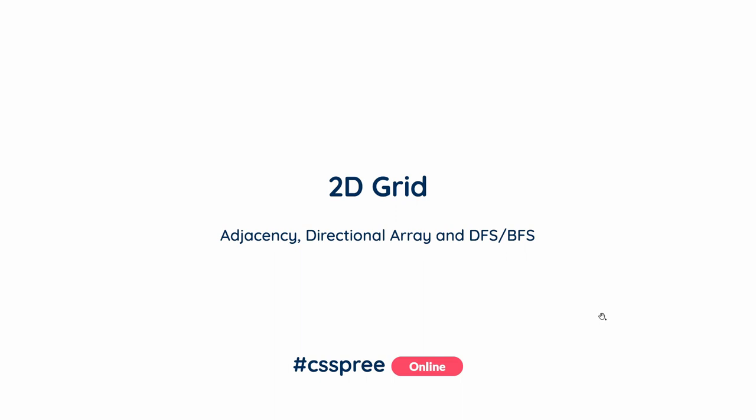Hello everyone, I am Tanfir Shajal. Today we are going to do 2D grid. We are going to look at the adjacent neighbor relation to the 2D grid. We are going to build up the directional array. We are going to look at the DFS and BFS code.